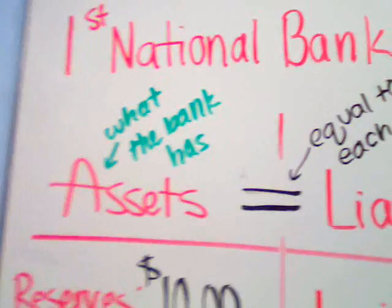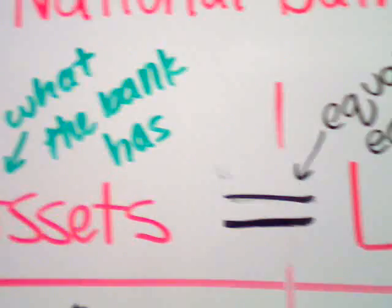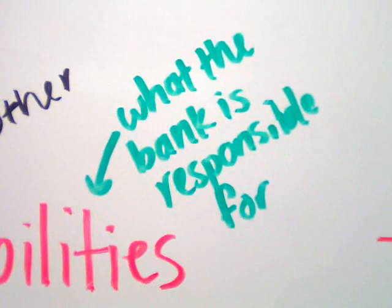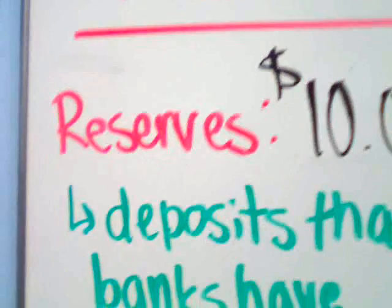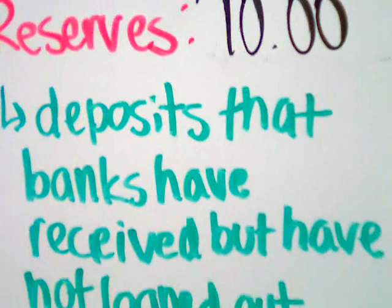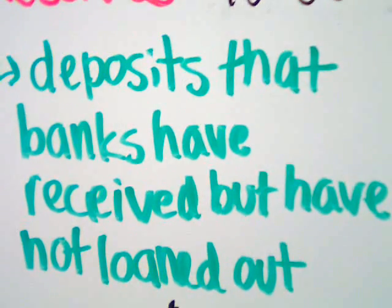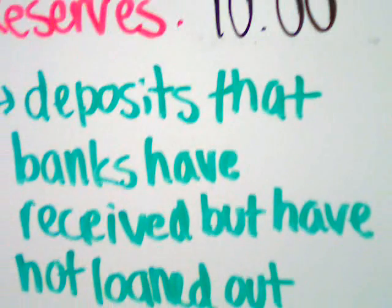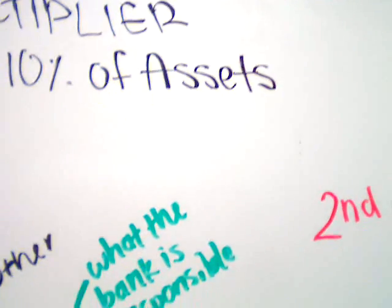Assets are what the bank has in their account, and it has to be equal to the liabilities, which is what the bank is responsible for. The reserves are the deposits that the banks have received but have not loaned out — it's the money they have to keep no matter what. In this example, we're going to say that all banks keep 10% of their assets.